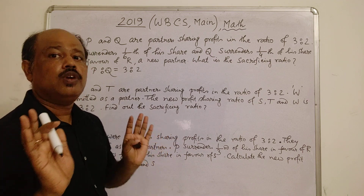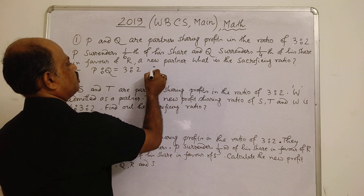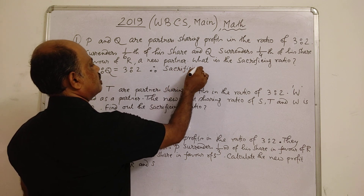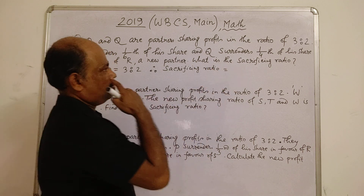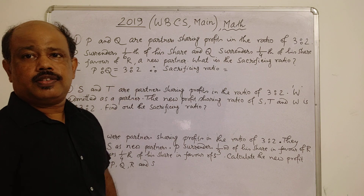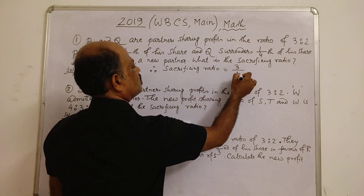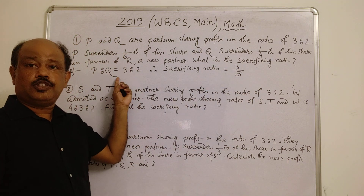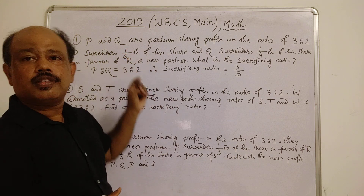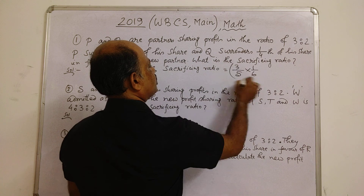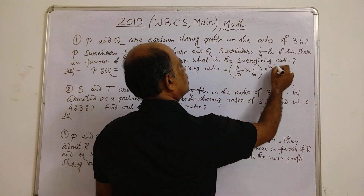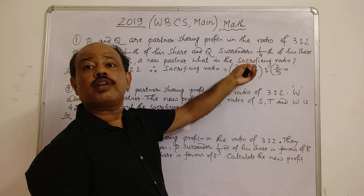Sacrificing ratio of P and Q: initially P has 3/5 of the total share. P surrenders 1/6th of that. So P's sacrifice = 3/5 × 1/6 = 1/10. Q has 2/5 of the total share.